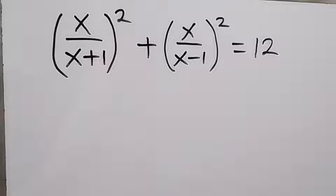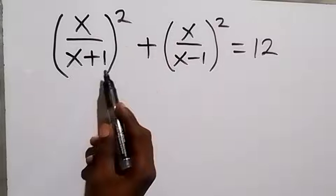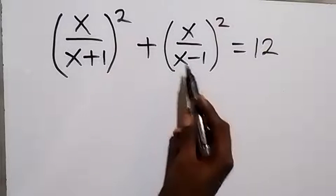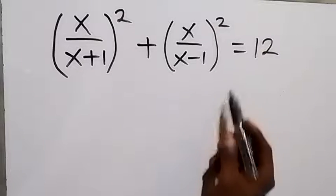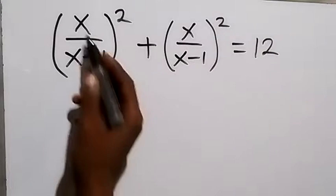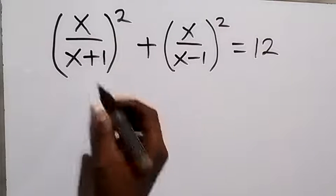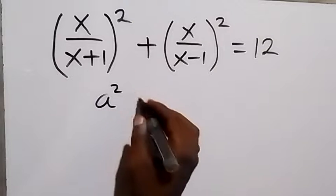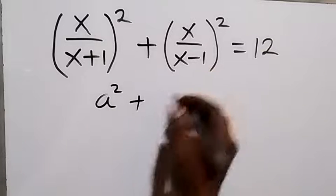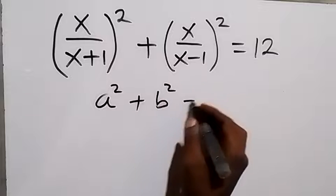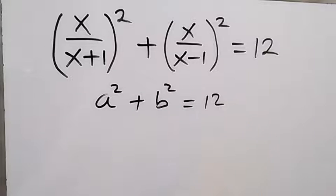Hello, you are welcome. How to solve this problem: x over (x+1), squared, plus x over (x-1), squared equals 12. From here, let's call this first bracket 'a', and we call this second bracket 'b', so we have a squared plus b squared equals 12.